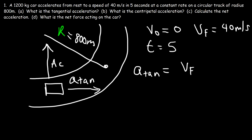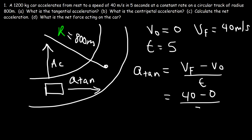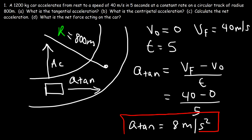The tangential acceleration is V_final minus V_initial divided by T, which is 40 minus zero divided by 5, giving 8 meters per second squared. So the tangential acceleration is 8 m/s². That's the answer for Part A.